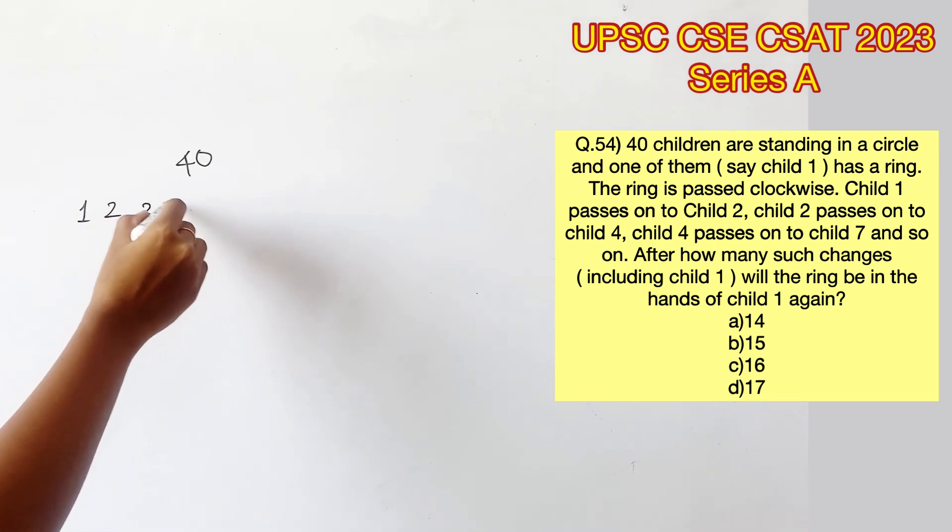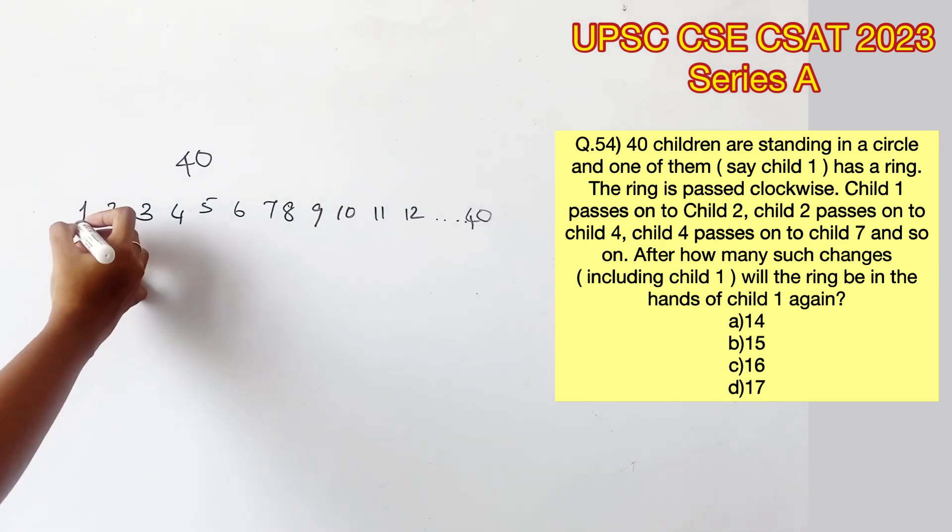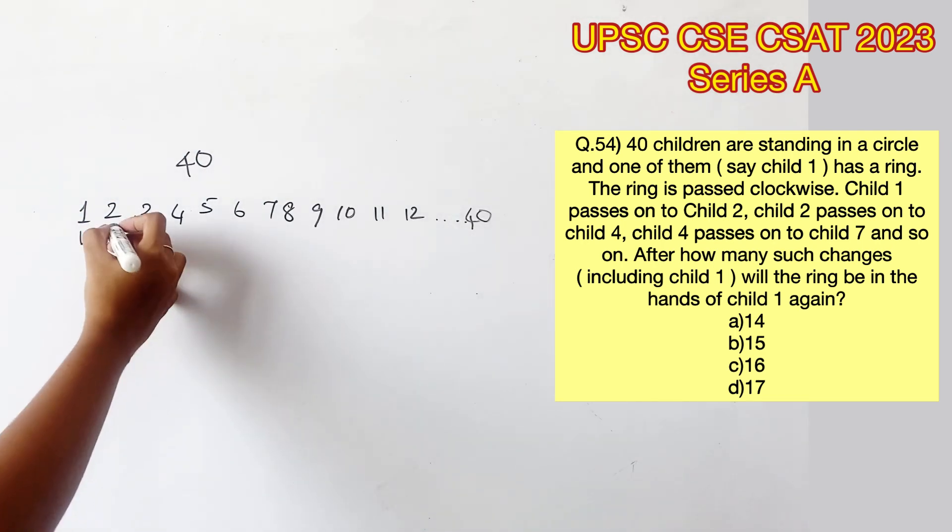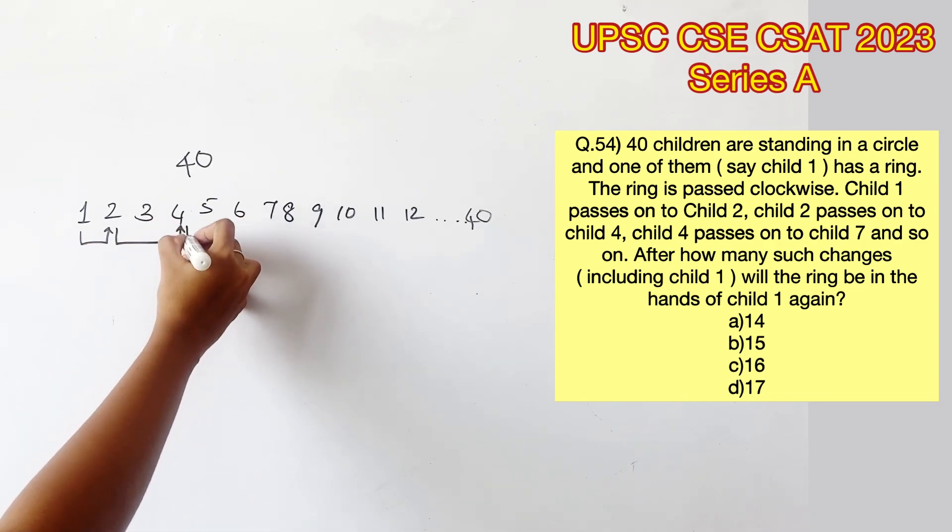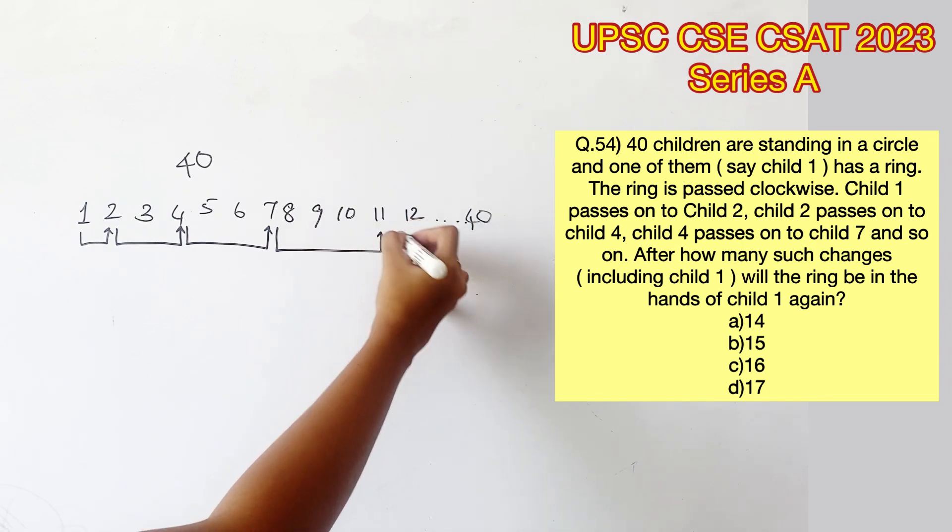40 children are standing in a circle and one of them, say child 1, has a ring. Now this child passes the ring to the second child, the second child passes to the fourth child, and the fourth child passes on to the seventh child, and the seventh child to the eleventh child.